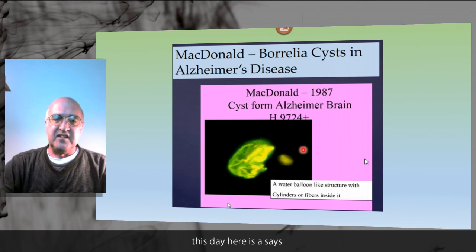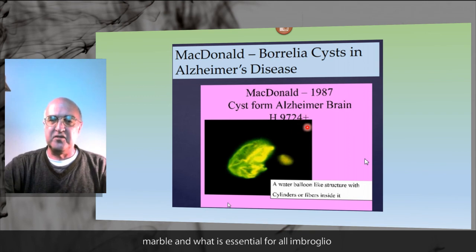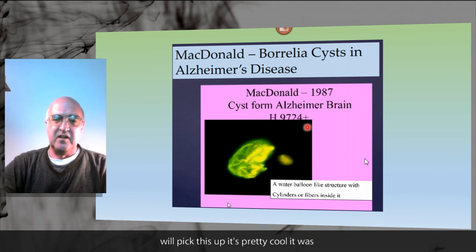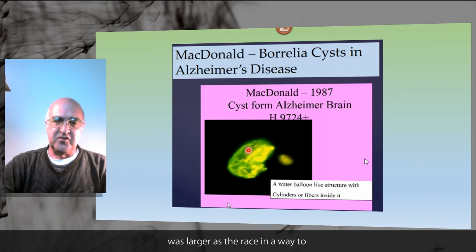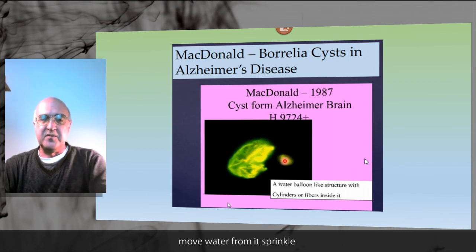Here is a cyst, again from a study with monoclonal antibody H9724. Only Borrelia will pick this up. It's wrinkled — it once was larger. It has become raisinoid, just as a grape becomes a raisin when you remove the water from it.